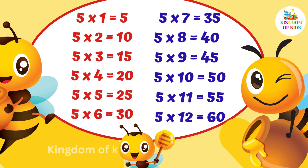5 1s are 5, 5 2s are 10, 5 3s are 50, 5 4s are 20, 5 5s are 25, 5 6s are 30.